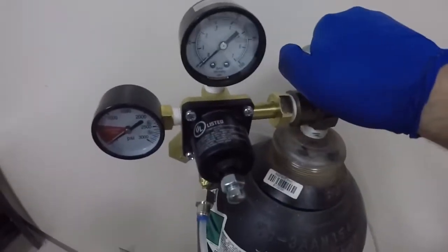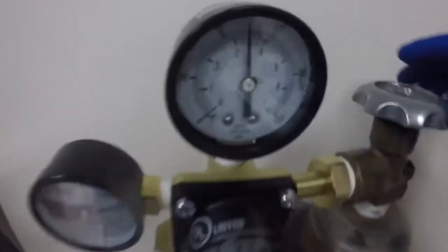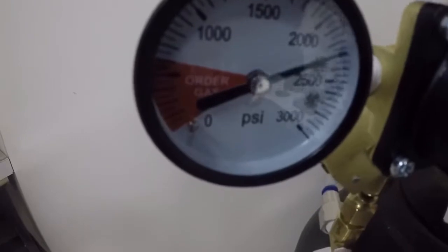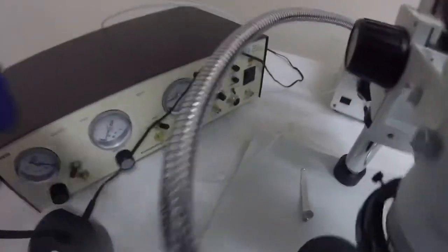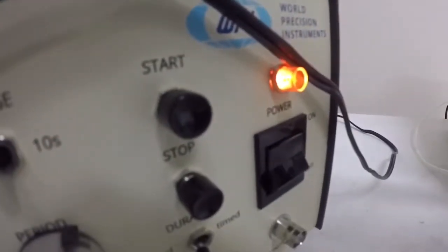Step 1, turn on your gas. You'll see the dials or gauges read that there is pressure. Step 2, get in here and flip your power switches. You'll see that light come on. Step 3, turn on the light for your microphone.